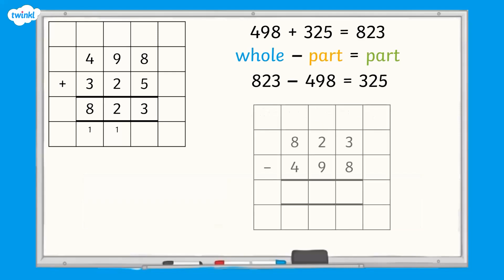To use the inverse to check our calculation, we now need to complete this subtraction. 823 subtract 498 equals 325, which matches our addition calculation, so we know it is correct.